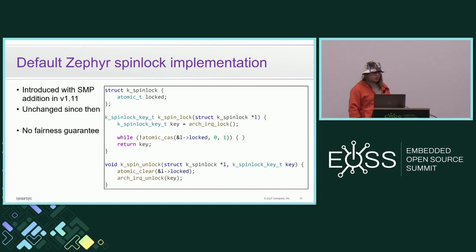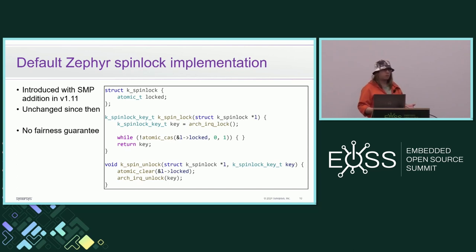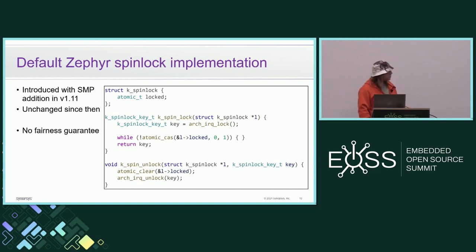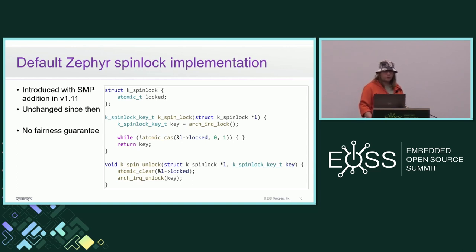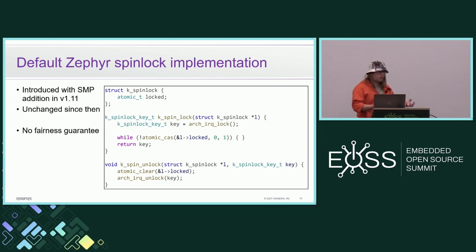Spinlock was just one atomic variable used as a flag. In the lock function we turn interrupts off on this core so the protected code won't be preempted, and after that we try to set this atomic flag if it's not yet set. In the unlock function we do it in the opposite order — we clear the flag and then turn interrupts back on. It's pretty simple, but there is no fairness guarantee at all. If multiple cores are trying to contend for a spinlock at the same time, there's no guarantee one specific core will ever get it.